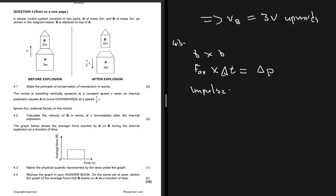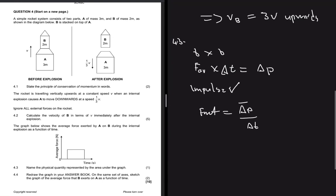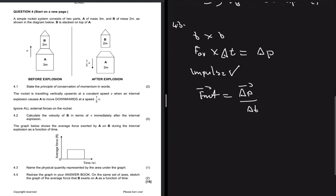This comes from the formula F_net equals delta p divided by delta t. Let's move ahead. 4.4 says redraw the graph and sketch the graph of the average force that B exerts on A as a function of time.